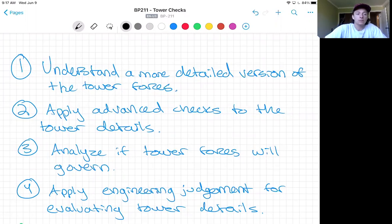Two, apply advanced checks to the tower details. Three, analyze if the tower forces will govern design. And four, apply engineering judgment for evaluating the tower details.